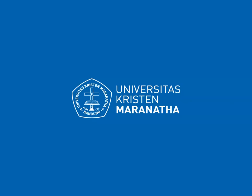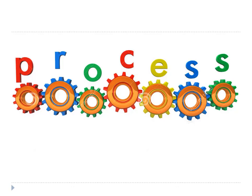Hi everyone, this is Jennifer and this is the second video of the transitivity system in systemic functional linguistics. In the last video we talked about circumstance, which is the element that adds enrichment to clauses by adding extra information about different types of time, place, and other things. In this video we're going to talk about processes and participants.